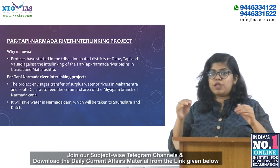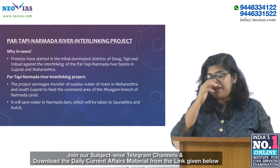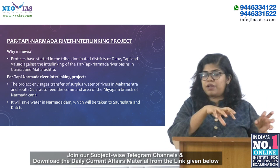The project will save water in the Narmada Dam, which will then be taken to the Saurashtra and Kutch region. It is aimed at diverting the surplus water from west-flowing rivers like Par, Naar, Ambika and Auranga basins in Maharashtra.